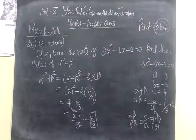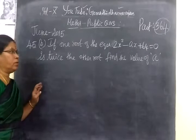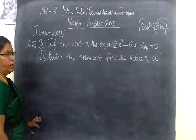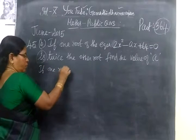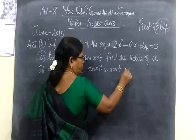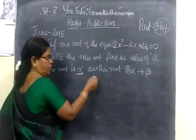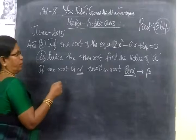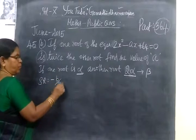Now, we do one more sum. It is given: if one root of the equation 2x² minus Ax plus 64 equal to 0 is twice the other, find the value of A. Since one root is twice the other, beta equal to 2 alpha. And you have to find the value of A. First, you need to know the sum of the root, which is minus B by A.